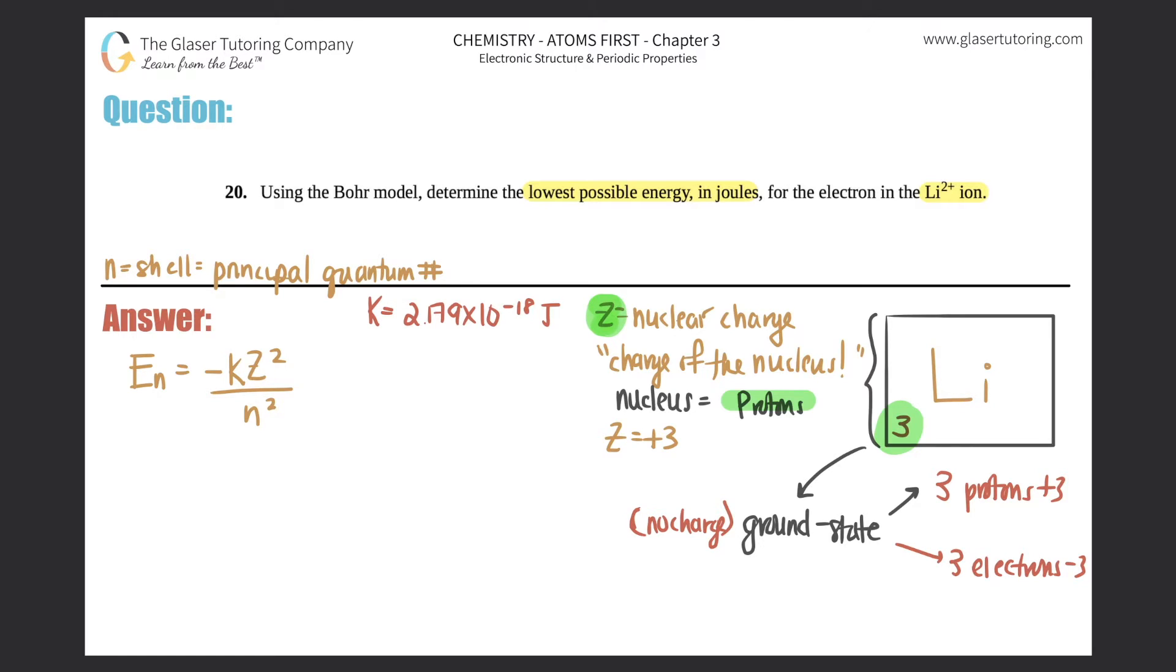Now we just have to figure out what the N value is. Okay. Well, they tell me that it's a lithium two plus ion. What does this two plus mean? Remember the numbers in the upper right-hand corner are always the charges. So plus two means that you lost two electrons. This goes back to your isotopes in chapter one. So if you feel that you may need more practice, just go back to chapter one and find those questions.